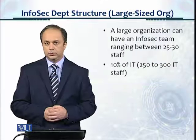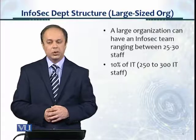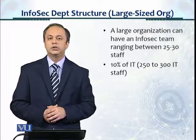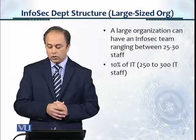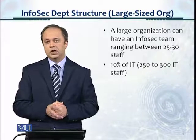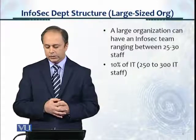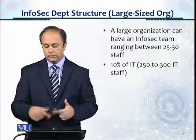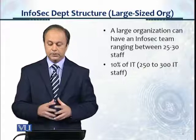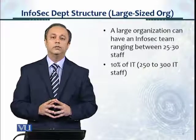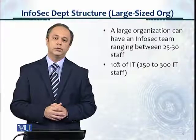In a large organization, an information security team typically ranges between 25 to 30 people. This is what we usually see in Pakistan, following the benchmark rule of thumb of about 10% of IT. So overall, there would be 250 to 300 IT staff in an organization of perhaps 4,000 to 5,000 people, and about 25 to 30 information security staff. In the next modules, we look at medium-sized and small teams as well. Thank you.